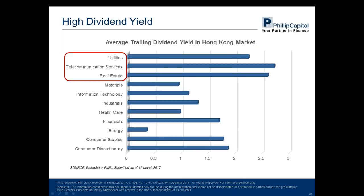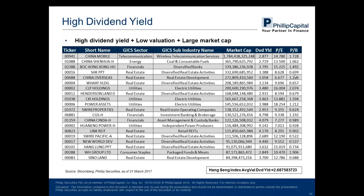The last opportunity is high dividend yield stocks. Since the Hong Kong market is more mature, traditional valuation methods are more effective here. We calculated the average dividend yield of each sector in Hong Kong market and identified the top three sectors. Considering PE ratio, PB ratio, and large market cap, these are the top 20 stocks with high dividend yield — higher than the Hang Seng index average — and we expect these stocks to have long-term investment value.